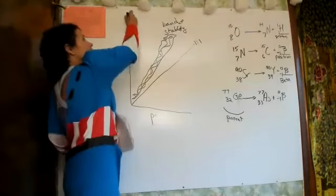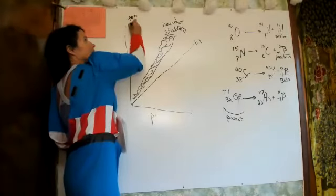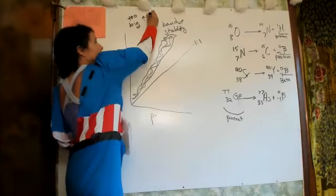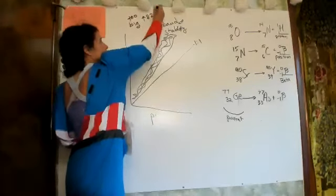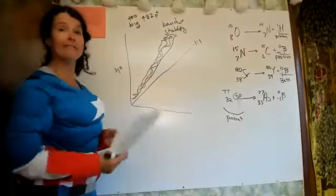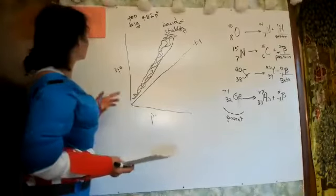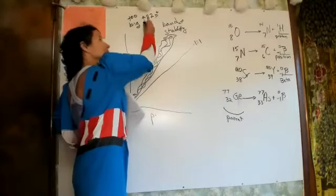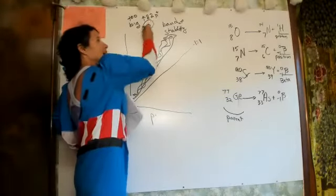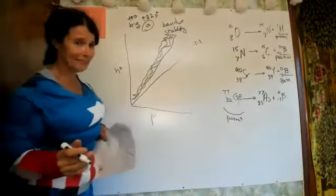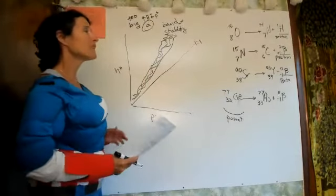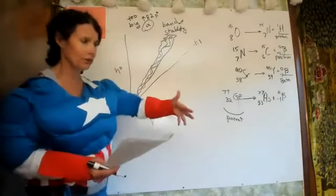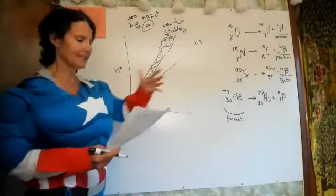If you get just too big — over 82 protons, everything after lead — you would predict they go through alpha decay because they need to lose weight; their nucleus is just too big to be stable. But they don't all go through alpha; some go through beta then alpha, or two betas then alpha.